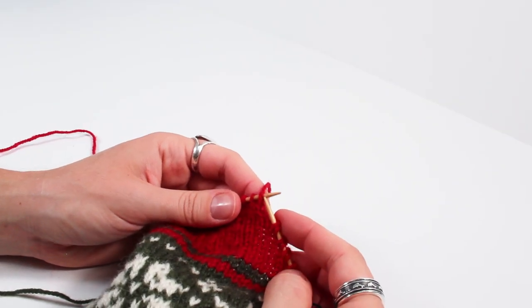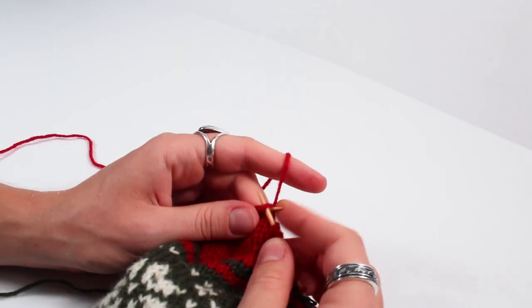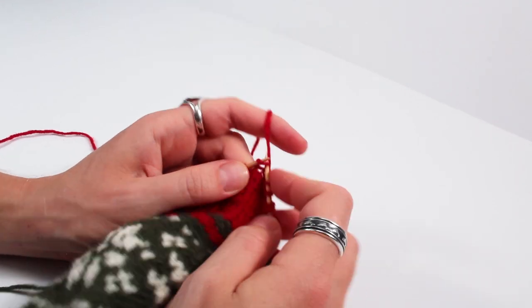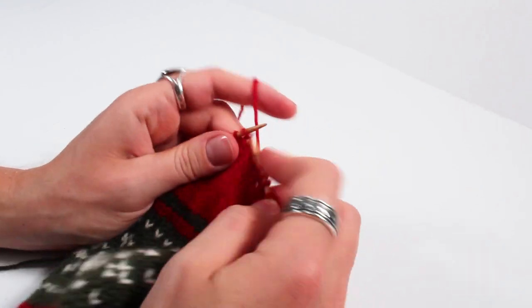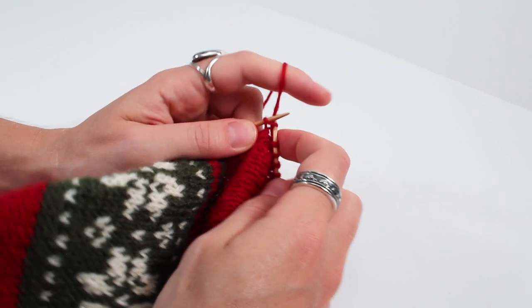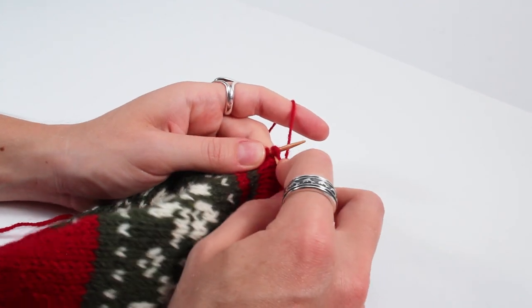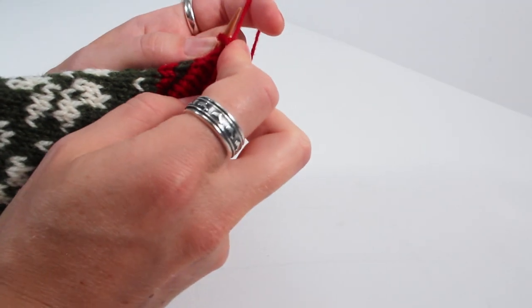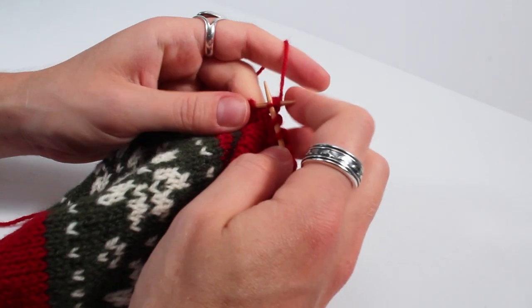And on the knit side we'll slip this first stitch purlwise. And then knit across to the next short row stitch. Showing you once again on the knit side to knit the double stitch. Sometimes it can be a little tricky to get through both those legs, but with some practice you'll get the hang of it.